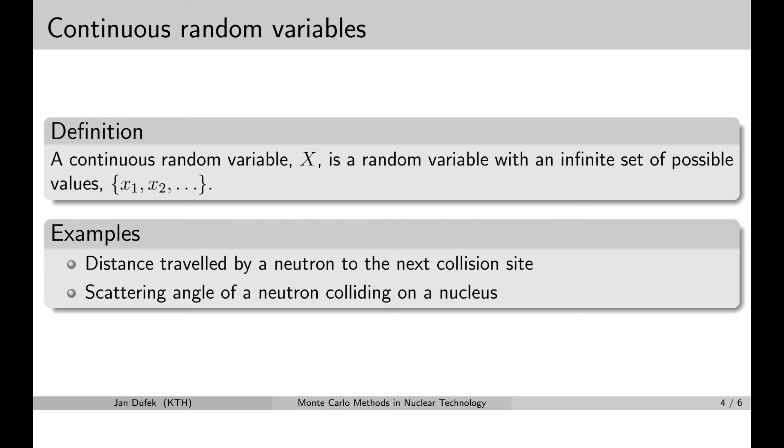Let's have a look at my favorite example of continuous random variable, which is the distance that neutron travels between collisions, between scattering collisions. Imagine we have a fission reaction and a neutron is released, prompt neutron, very fast and it scatters. It makes a number of collisions and eventually it is captured.